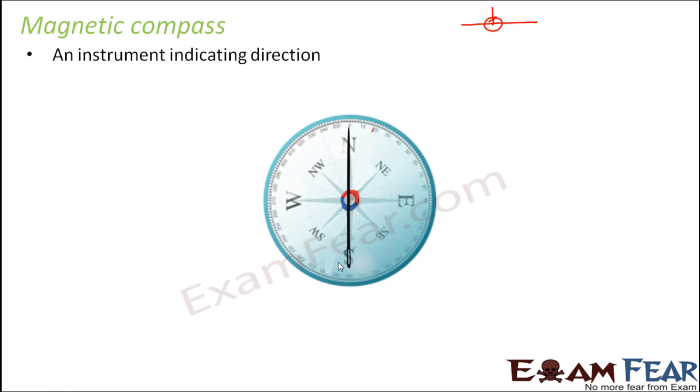This is how the needle would look like. Now this needle is actually a tiny magnet. If you talk about the needle, this is the most important part of the magnetic compass. The needle is nothing but a tiny magnet.